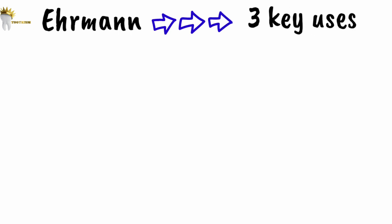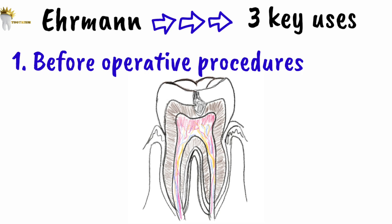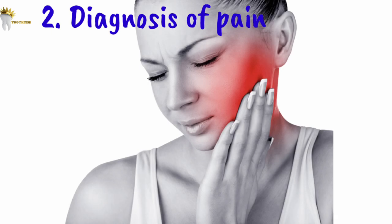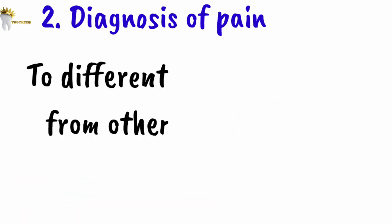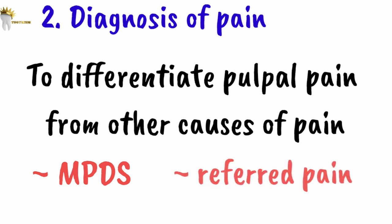Airman has proposed three key uses of pulp testing. First, before operative procedures — for example, when we want to restore a tooth and the health of the pulp is in question. Second, for diagnosis of pain: pulp tests can be used to find the source of oral pain, particularly for pain in the trigeminal area, helping us differentiate pulpal pain from myofascial pain dysfunction syndrome or referred pain.